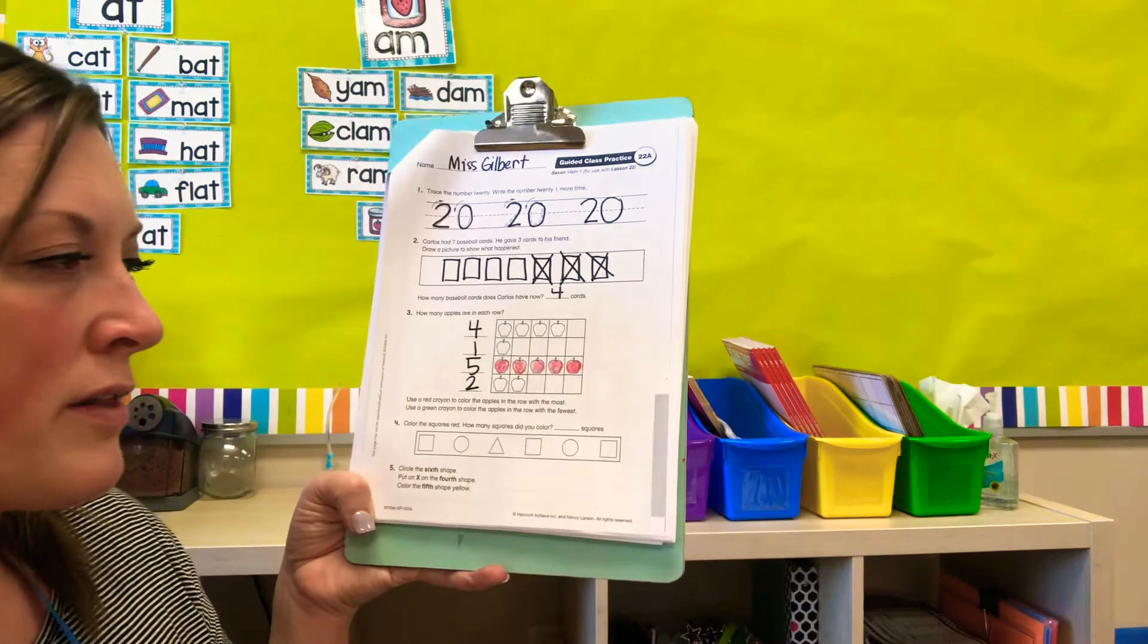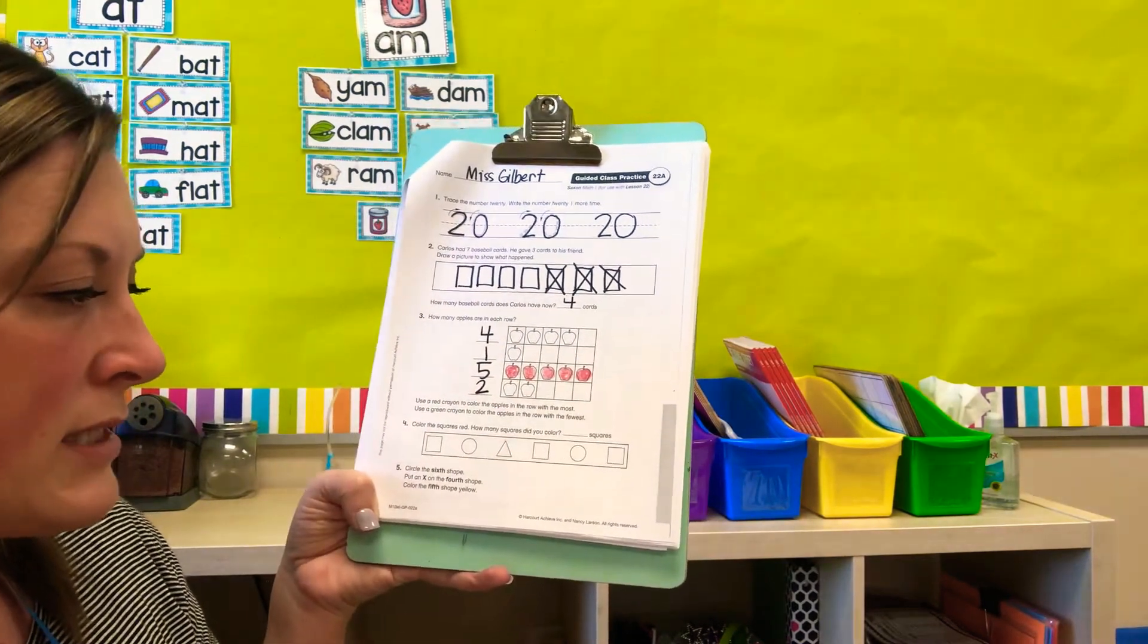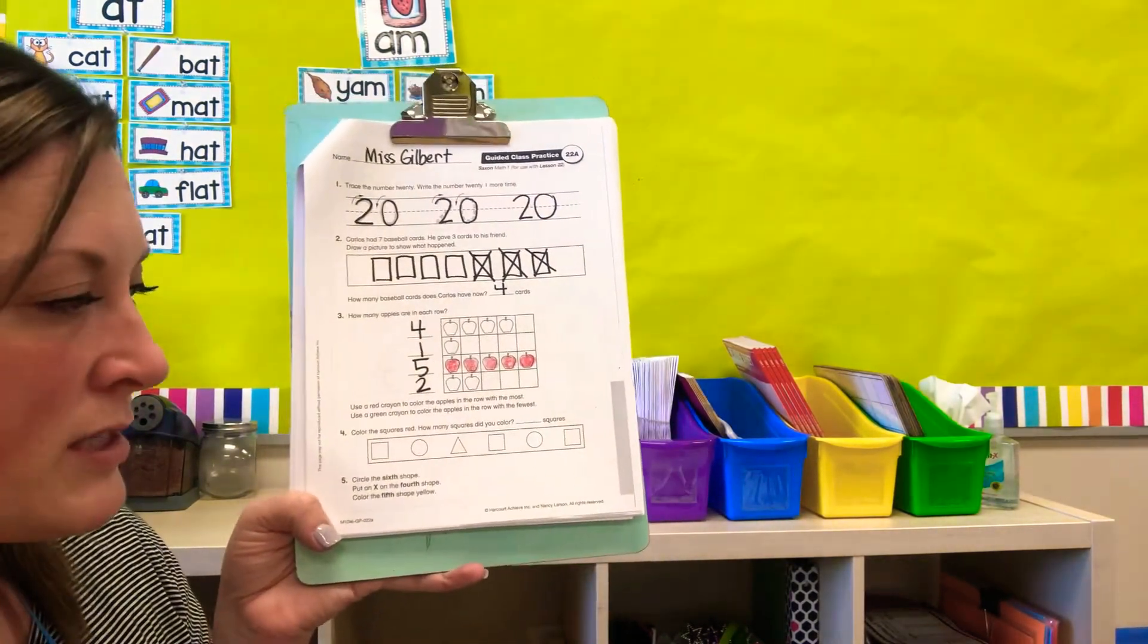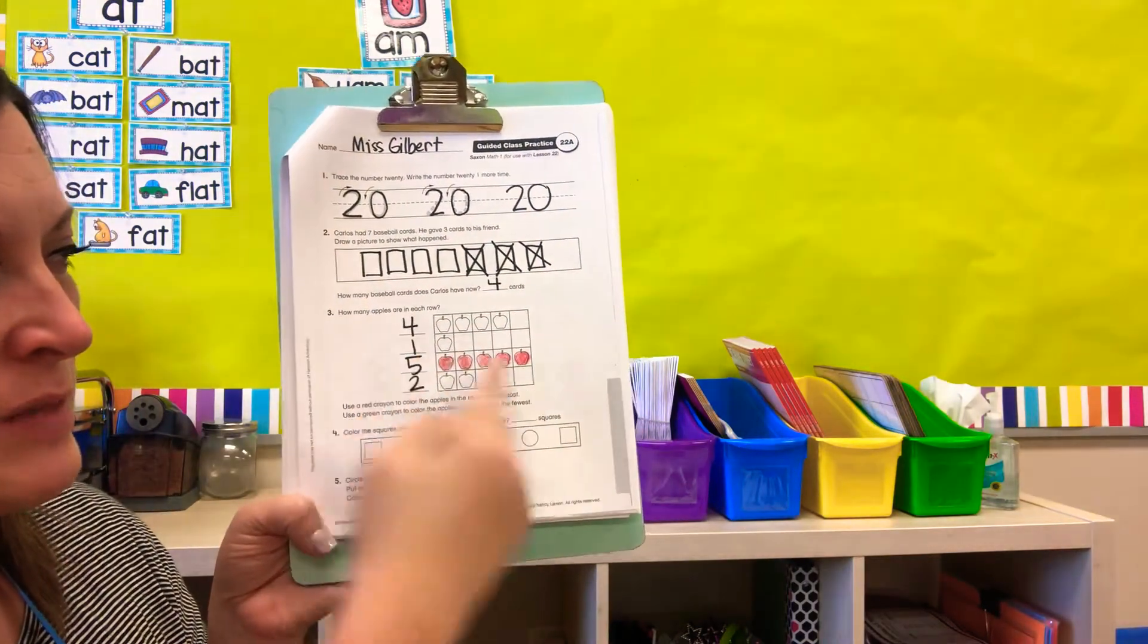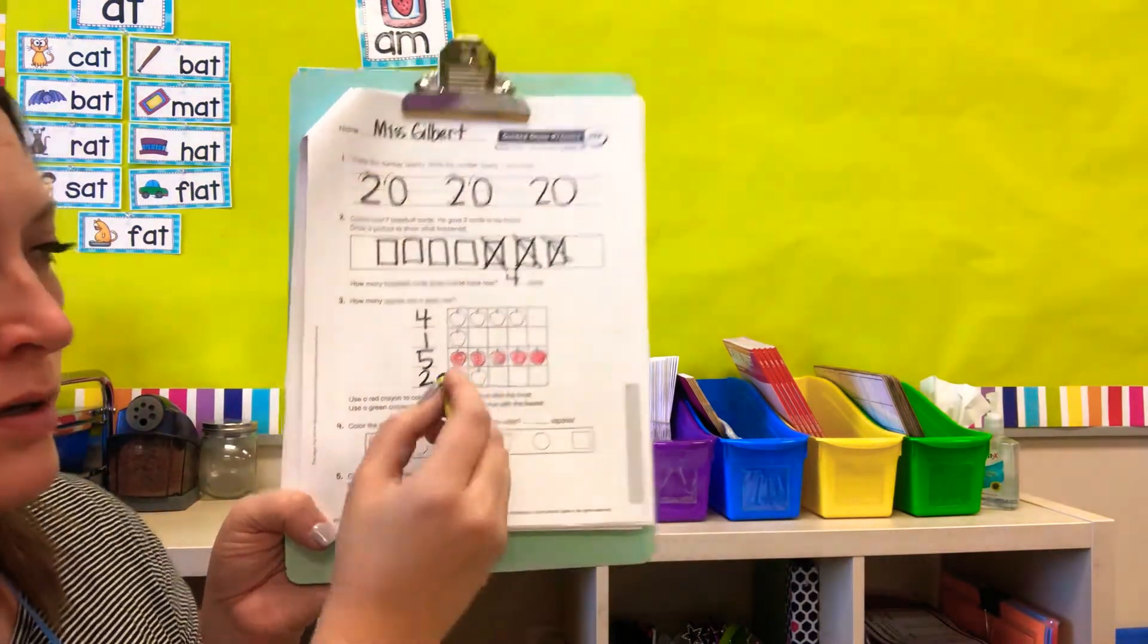Okay. Use a green crayon to color the apples in the row with the fewest. Fewest means smallest. Which one has the smallest amount of apples in the row? Number one. Color that row green.